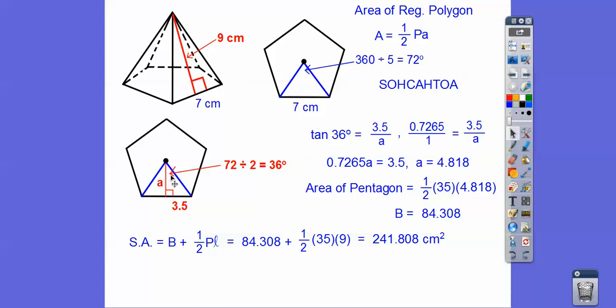So then the tangent of this 36 equals opposite over adjacent, so I did that right there. So we get the tangent of 36 is 0.7265, and then we cross multiply right there, so we get this stage right here, then we divide. So the apothem is 4.818.